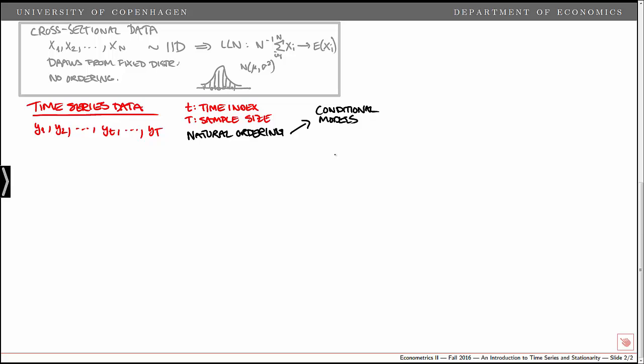So we can work with a model for Y at time t, conditional on past observations, Yt minus 1, Yt minus 2, and so on.